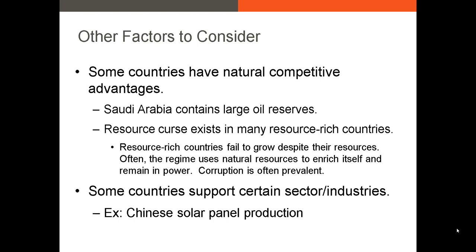The regime is able to remain in power due in part to its control of the natural resource, while other members of the population remain impoverished, which can lead to political instability and corruption. In many cases, such as in the Democratic Republic of the Congo, that instability can lead to coup attempts and civil war, which is not good for any investments in the area.